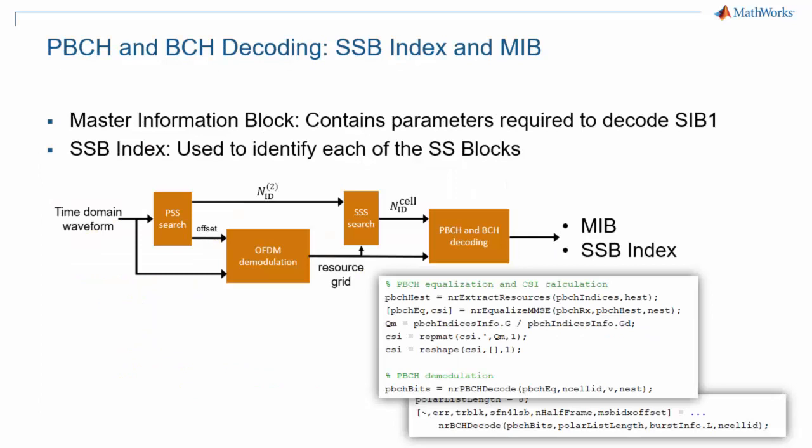Each SSB comes with a realization of a physical broadcast channel and associated DMRS. The knowledge of cell ID is important to demodulate the BCH, as it enables the UE to generate the right DMRS for channel estimation. Once the BCH has been demodulated, the master information block and the SSB index are known. The next few slides explain the different steps for BCH demodulation.